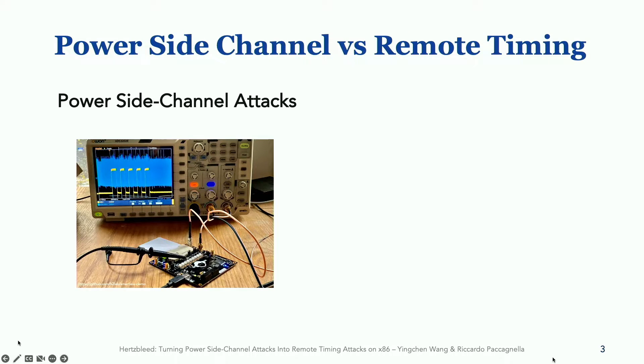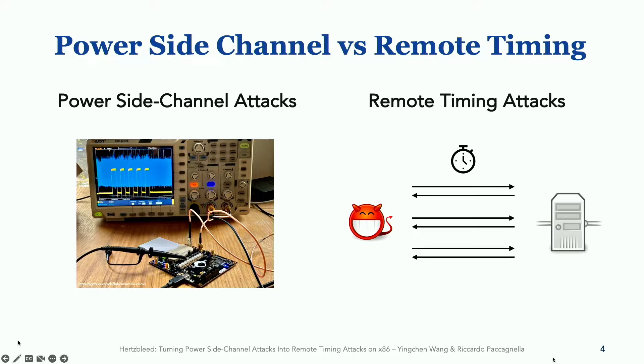On the one hand, we have power side-channel attacks. These attacks allow to infer very small changes in a program's execution, but they require access to some special measurement interfaces. On the other hand, we have remote timing attacks. These attacks only allow to infer coarse-grained changes in a program's execution. However, they do not require access to any special measurement interface.